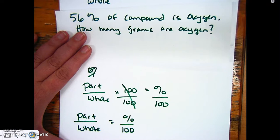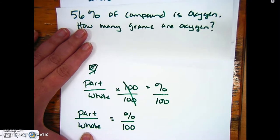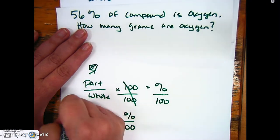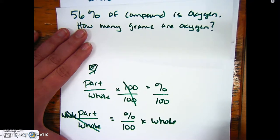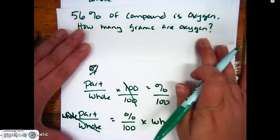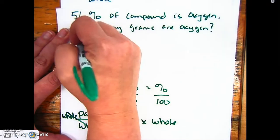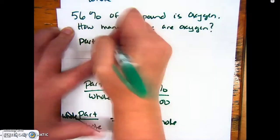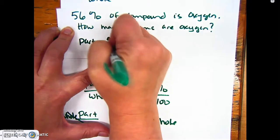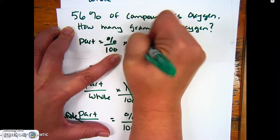Then the last thing to get the part by itself is to multiply by the whole on both sides. So essentially, to solve for the part, I take the percent over 100 and multiply by the whole.